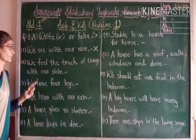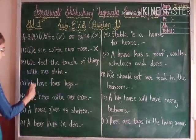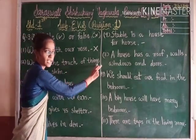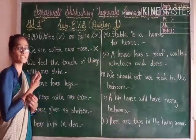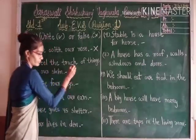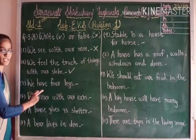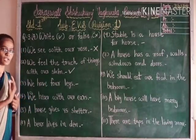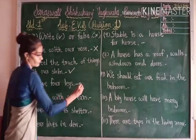Number 2: we feel the touch of things with our skin. Yes, it is true. We feel the touch of things with our skin, so this sentence is true. Number 3: we have 4 legs. How many legs do we have? We have only 2 legs. We do not have 4 legs, so it will be false.